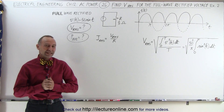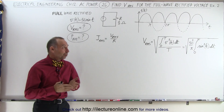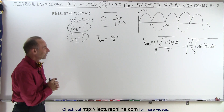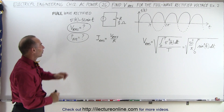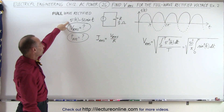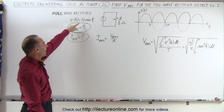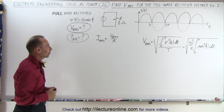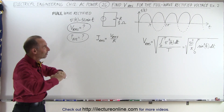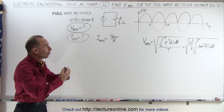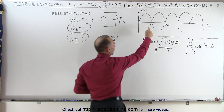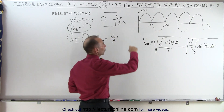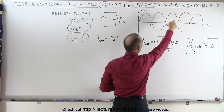Welcome to Electronline. In this example we're going to find the RMS voltage of a full wave rectified voltage source. Here's the equation for the voltage source as a function of time: it's 50 times sine of t. 50 represents the maximum voltage during the cycle, but since it's full wave rectified, the portion that would normally go below the axis gets folded over.